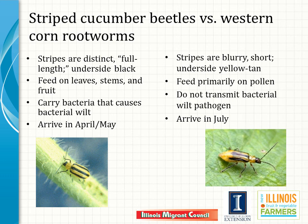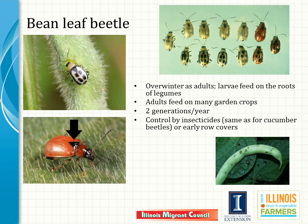Bean leaf beetle is a common beetle that feeds on the foliage of many crops, especially beans. These overwinter as adults and larvae feed on the roots of legumes through two generations per year in the Midwest. Adults feed on lots of garden crops. Control them with the same insecticides used for cucumber beetles, and row covers can keep them off plants early in the season.